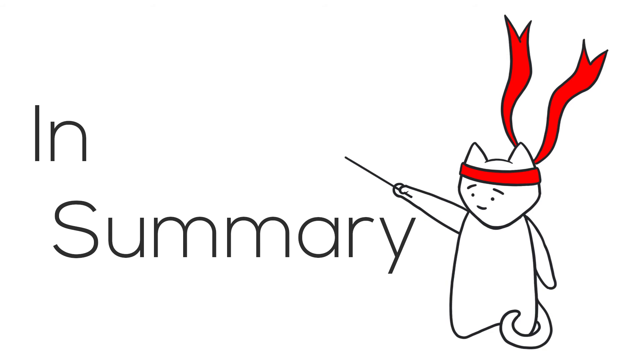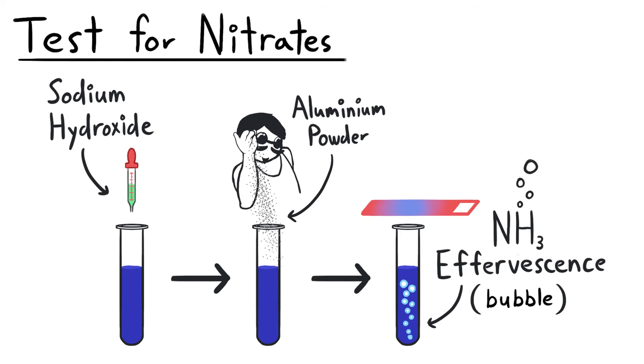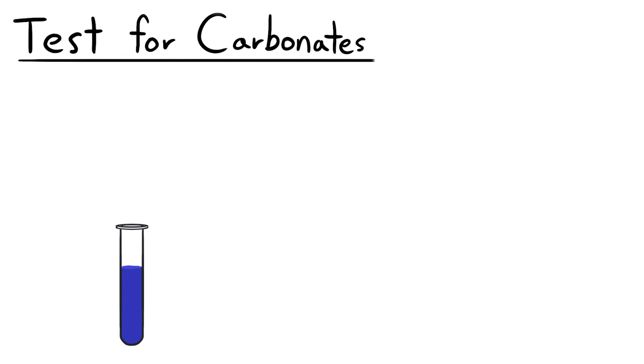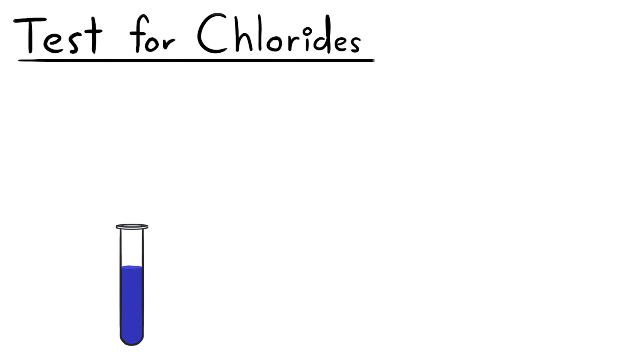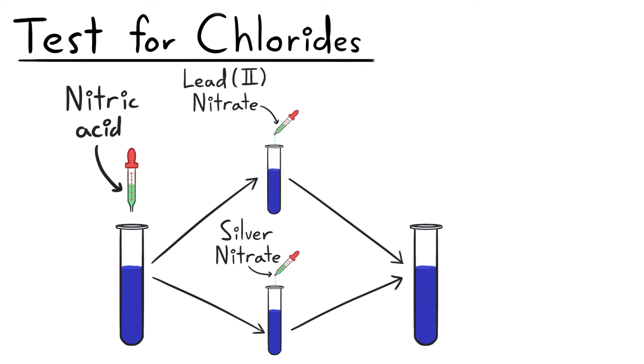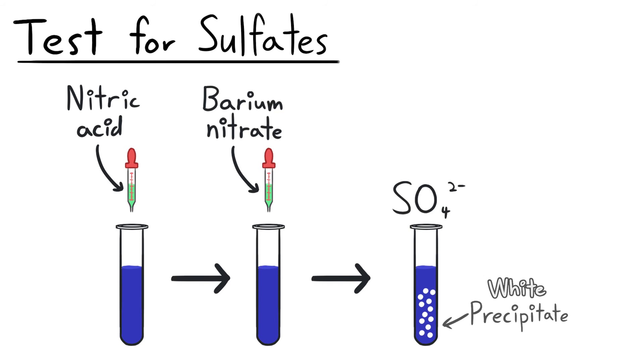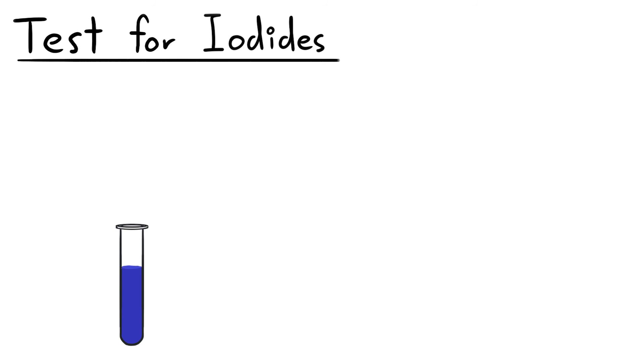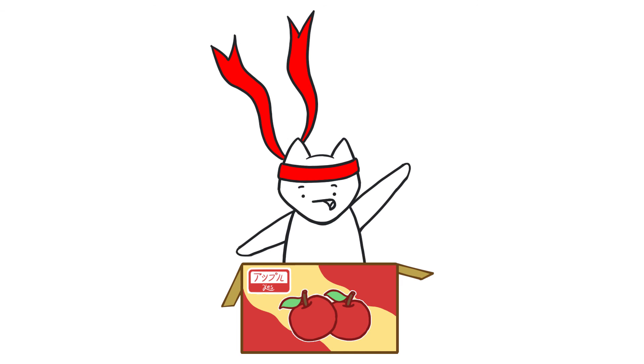In summary, for nitrate ion tests, sodium hydroxide and aluminum powder is added to produce ammonia gas. For carbonate ion tests, hydrochloric acid is added to produce carbon dioxide gas. For chloride ion tests, nitric acid and lead nitrate or silver nitrate is added to produce white precipitate. For iodide ion tests, nitric acid and lead nitrate is added to produce white precipitate. For iodide ion tests, nitric acid and lead nitrate or silver nitrate is added to produce yellow precipitate. And that about covers the anion tests.